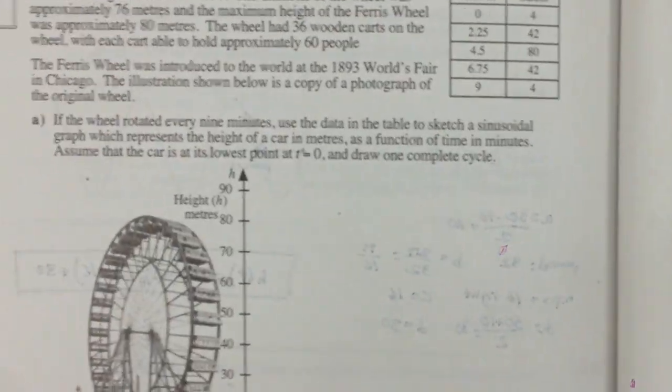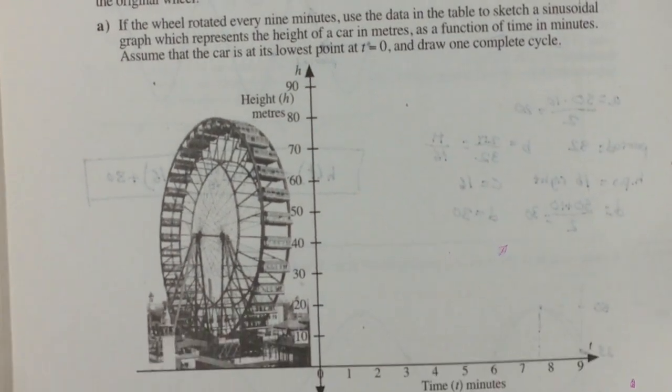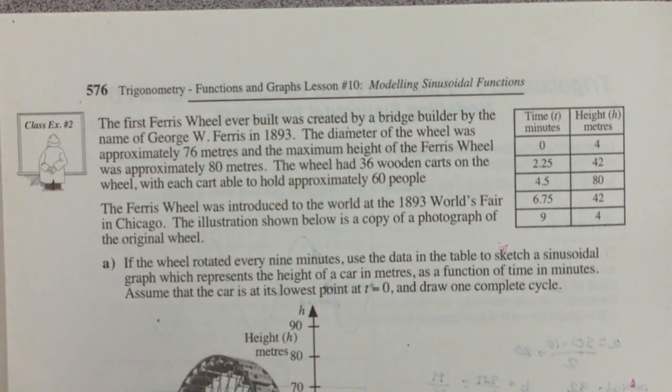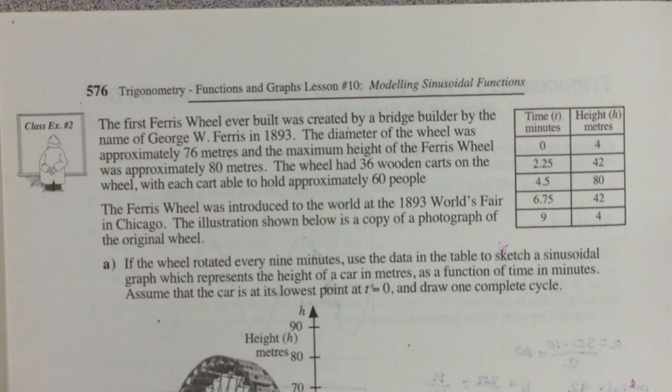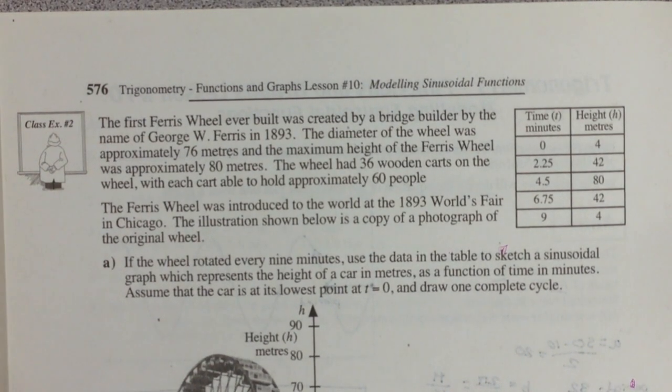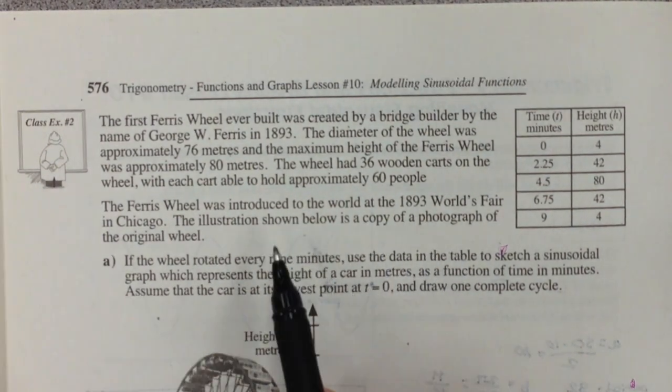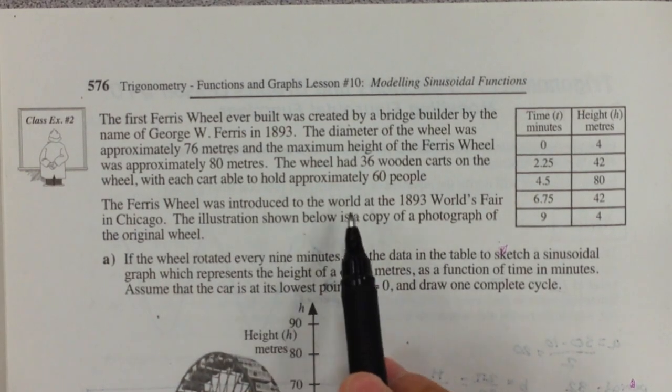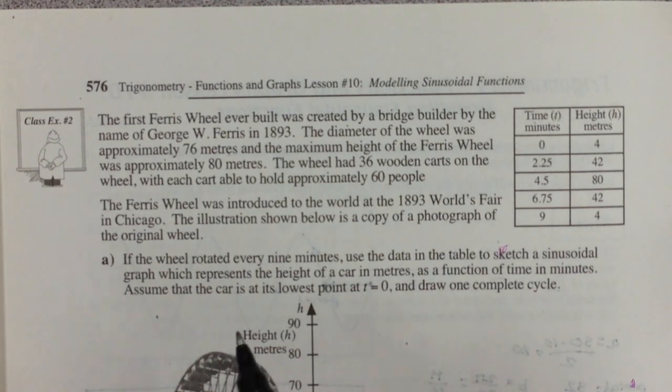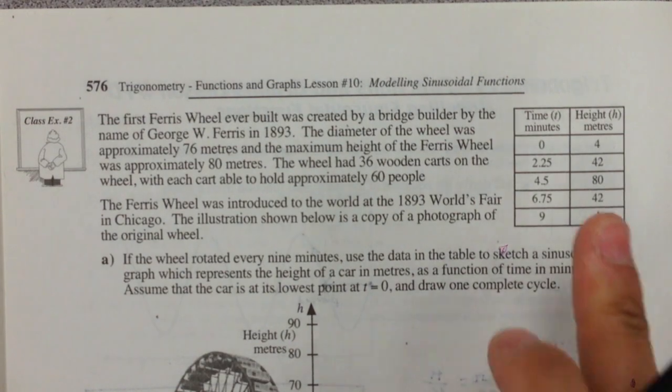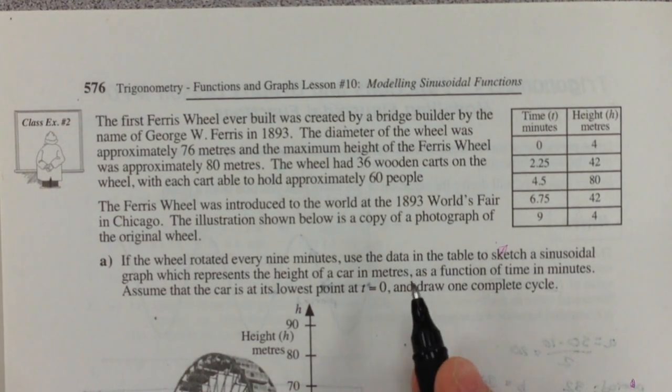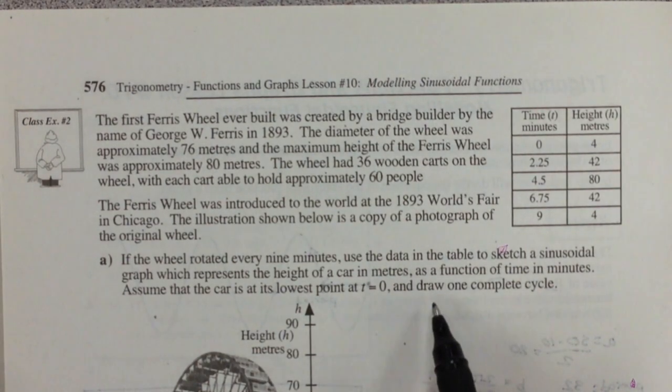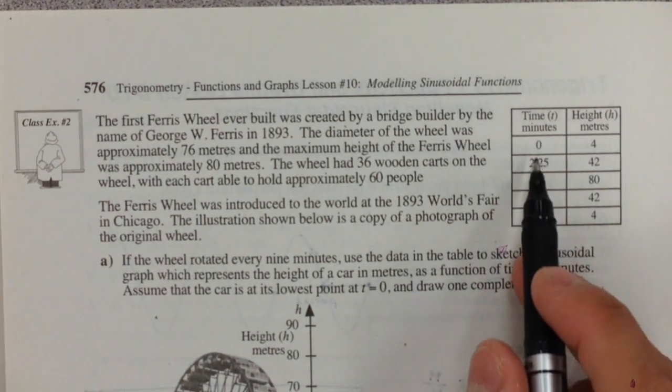Our last example, class example number two. We have a Ferris wheel. The first one created by a bridge builder named George Ferris in 1893. The diameter of the wheel was approximately 76 meters, and the maximum height was approximately 80 meters. The wheel had 36 wooden carts, each able to hold approximately 60 people. If the wheel rotated every nine minutes, use the data in this table to sketch a sinusoidal graph. Assume that the cart is at its lowest point at zero, and draw one complete cycle.